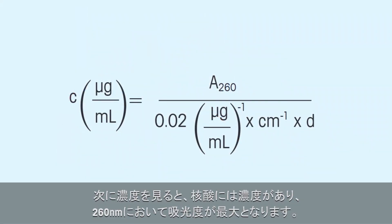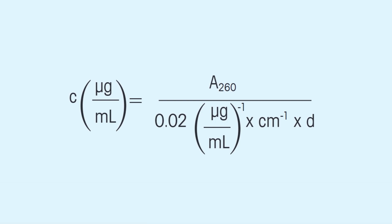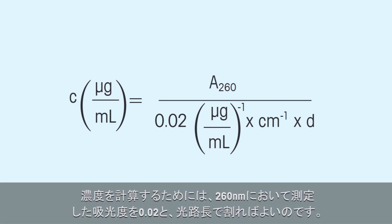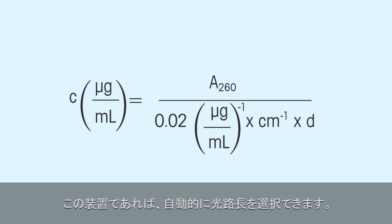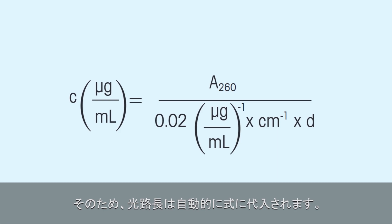When it comes to the concentration, the nucleic acid has an absorbance maximum at 260 nanometers. In order to calculate the concentration, we can divide the absorbance measured at 260 nanometers by 0.02, and by the path length. The instrument can select the path length itself, so the path length will be entered into the formula automatically.